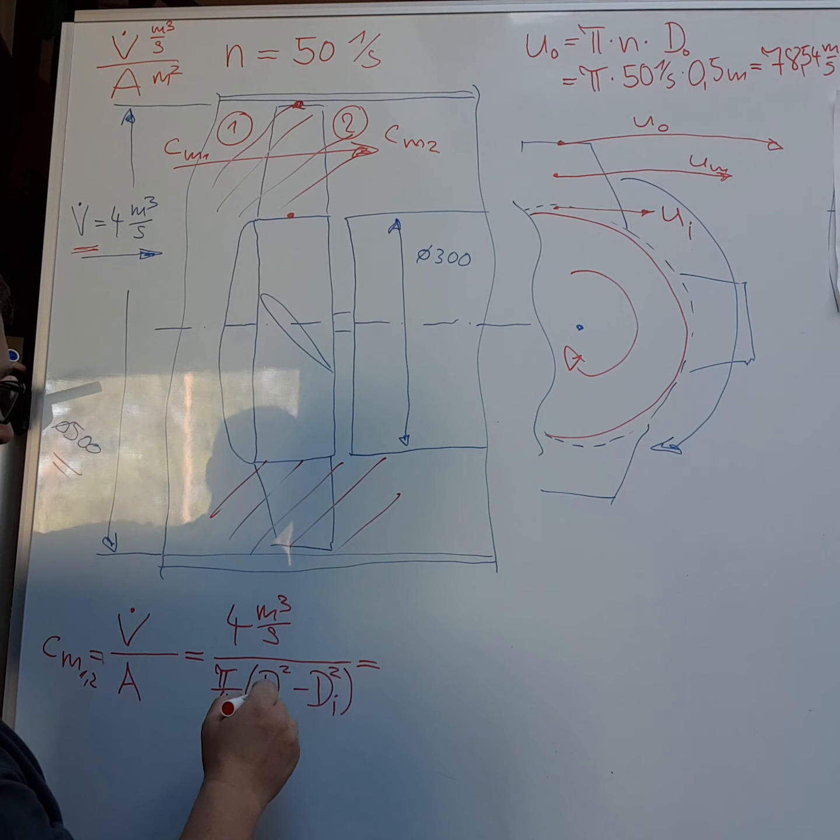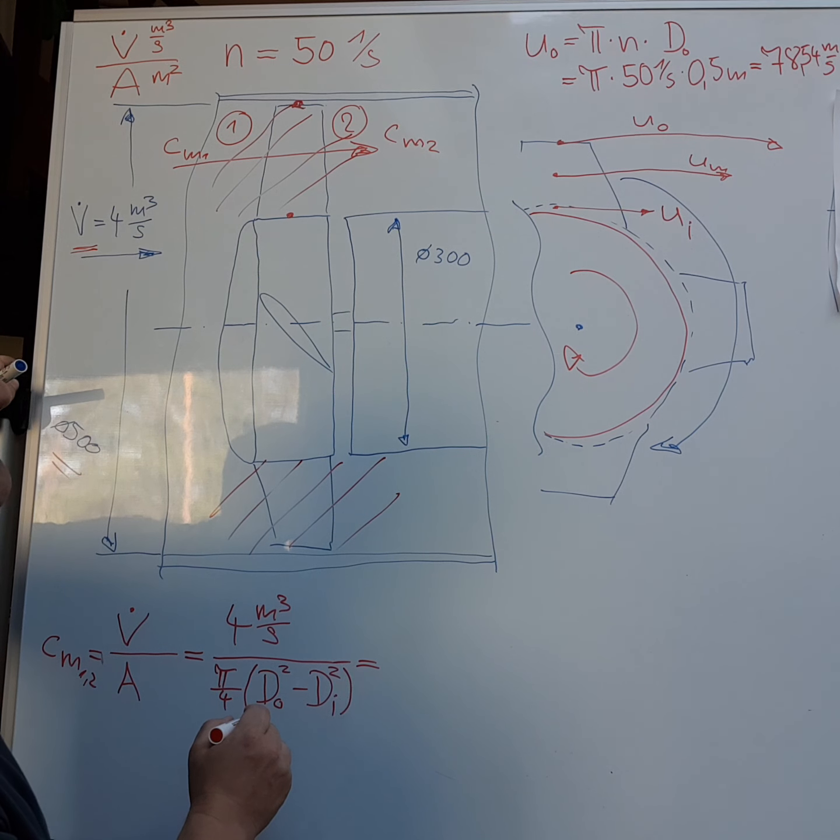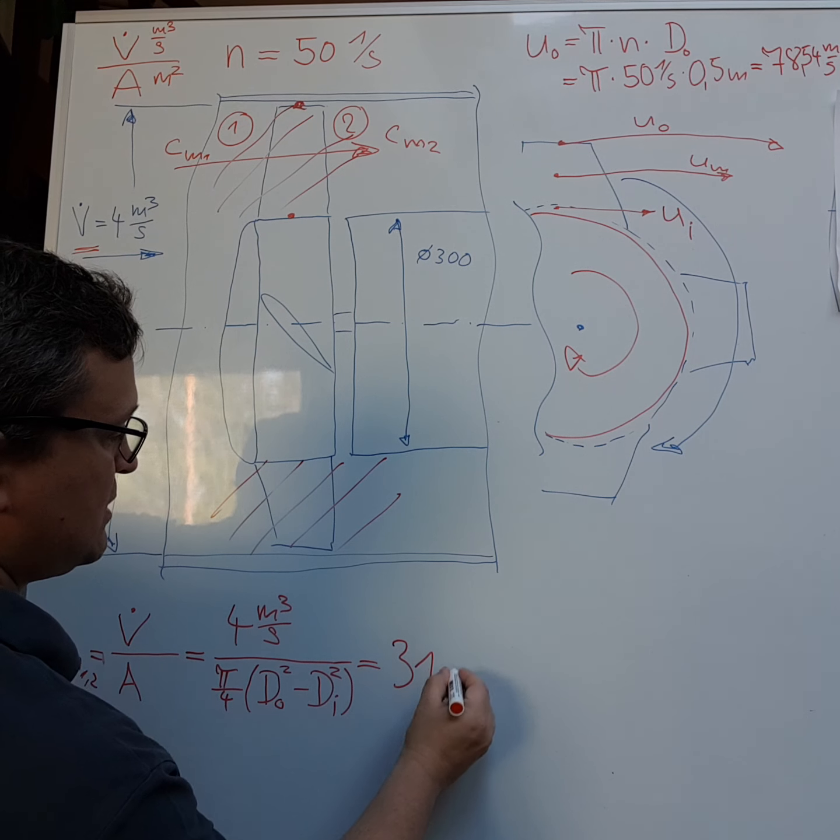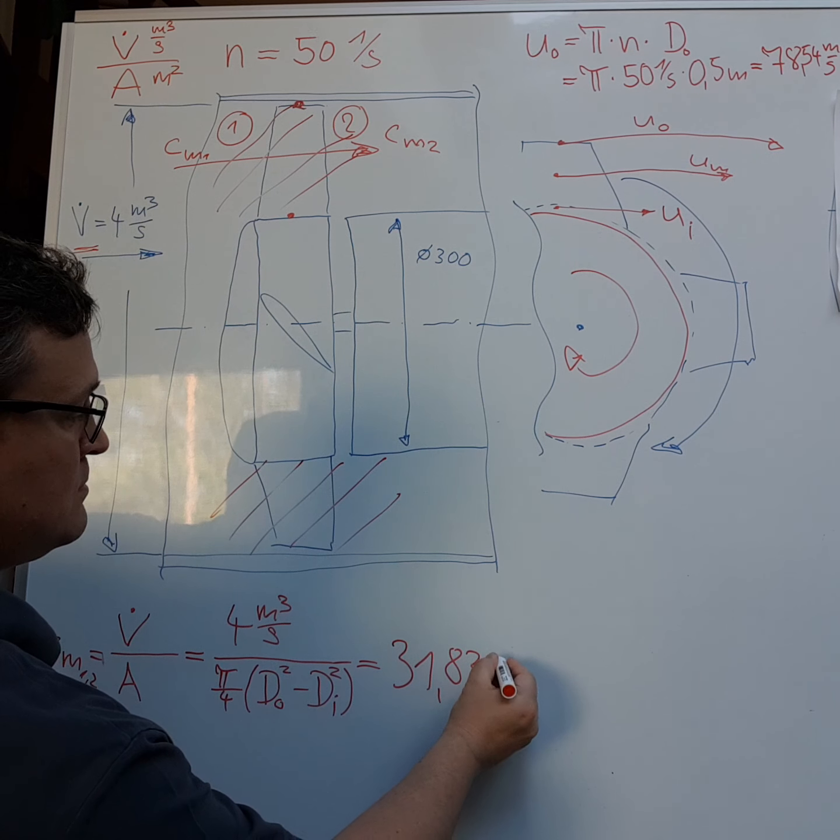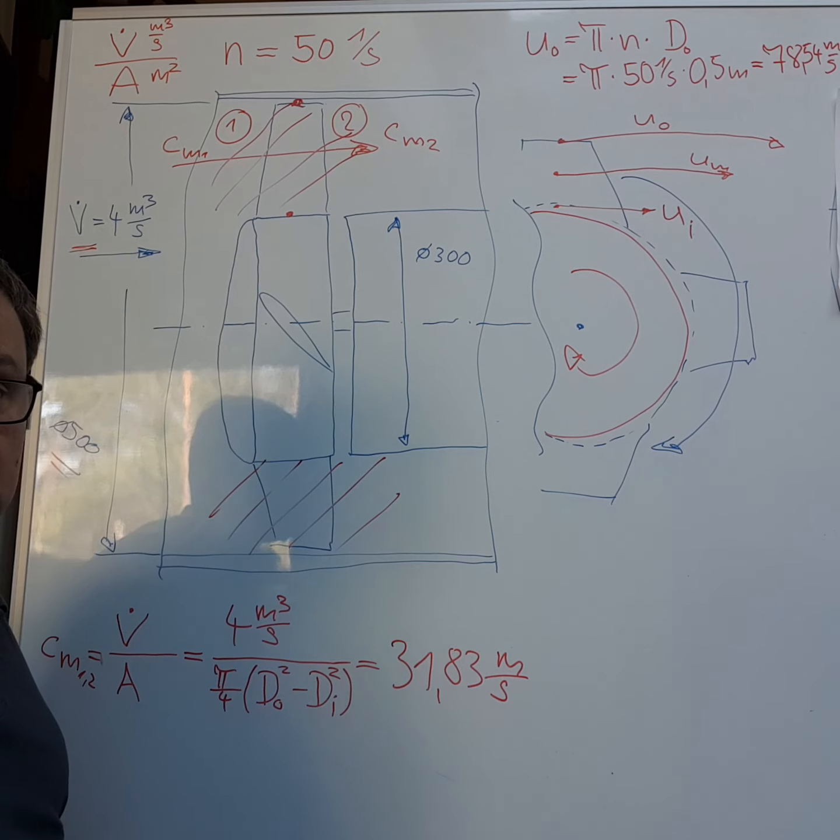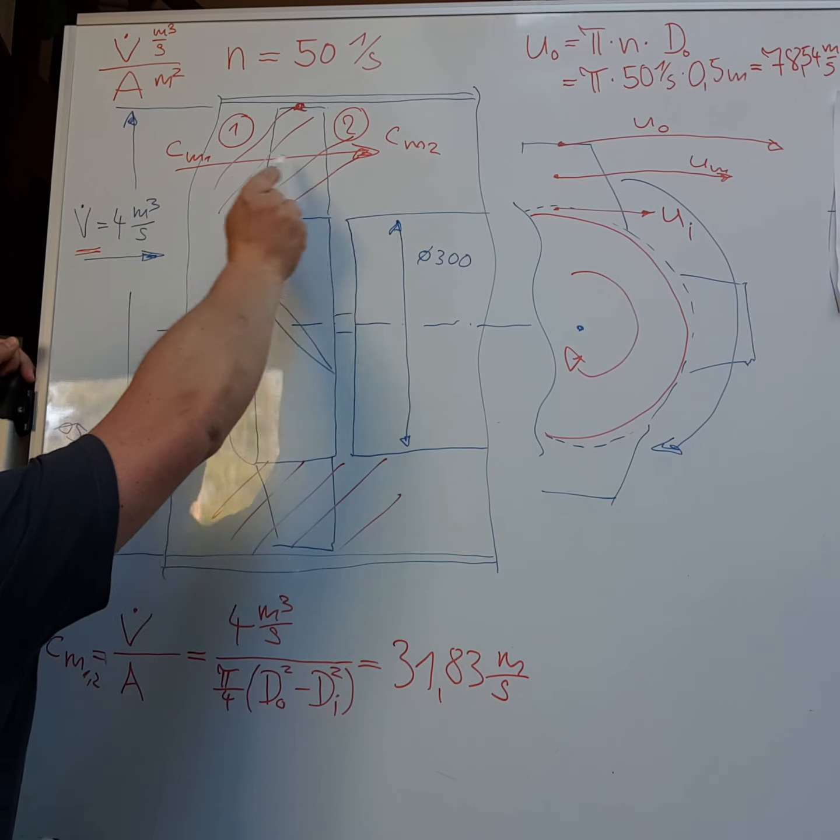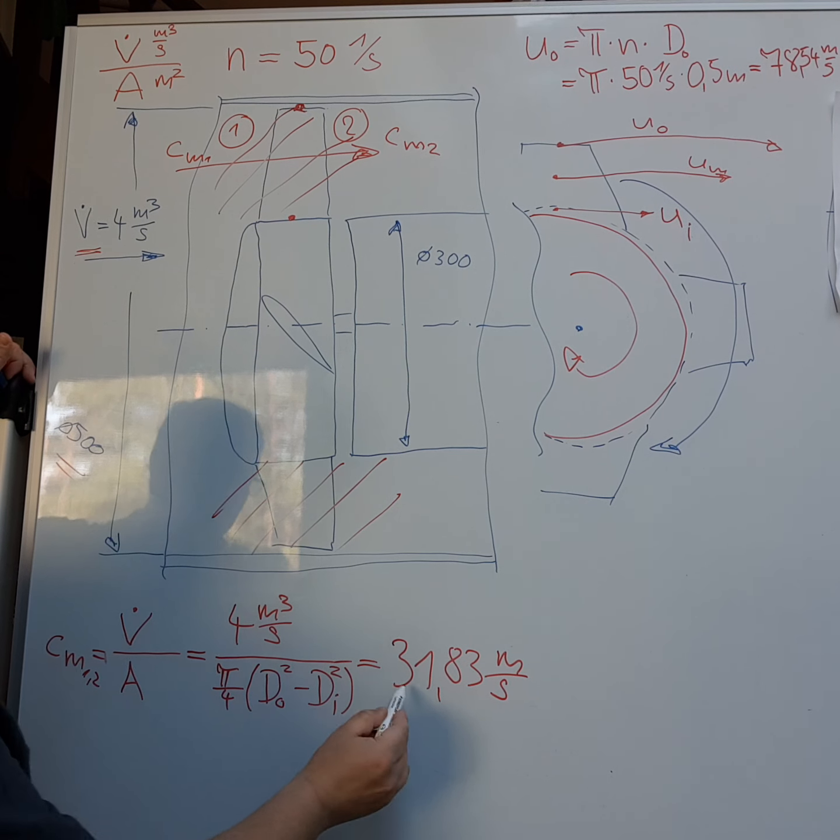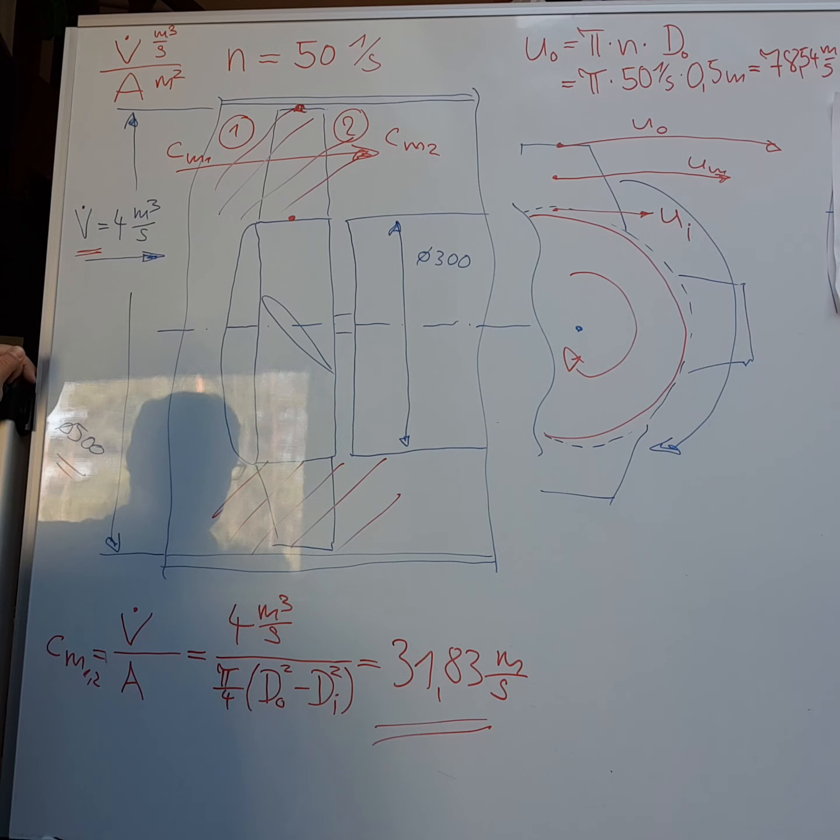Let's say 31.83 meters per second. Now we have the velocity here, the air velocity that goes through the ventilator. It's 31 meters per second.